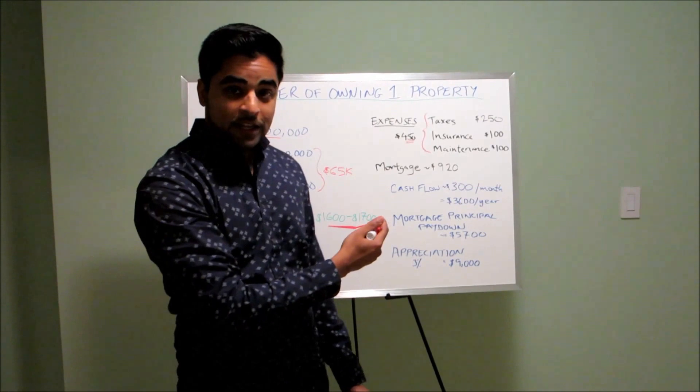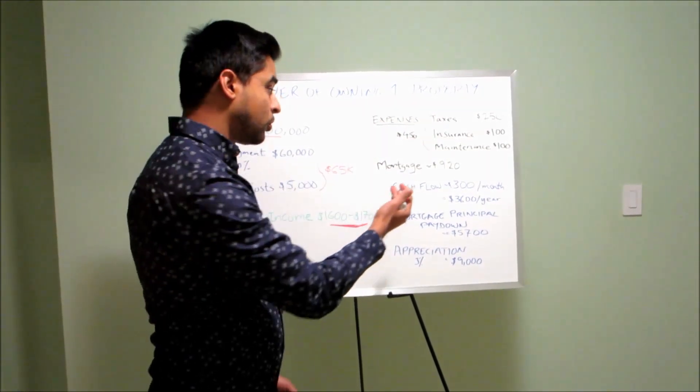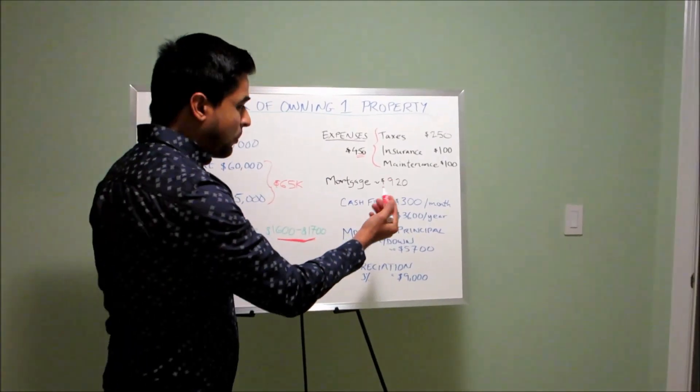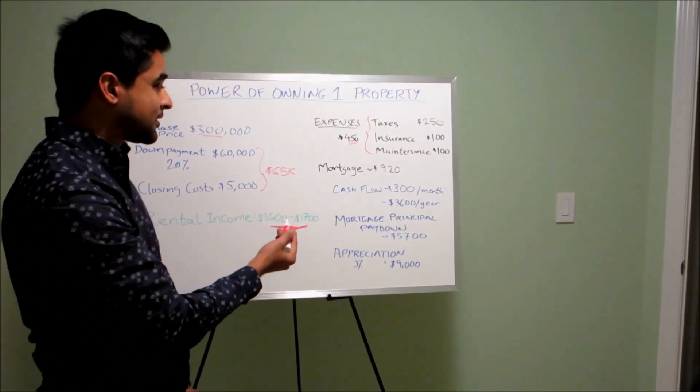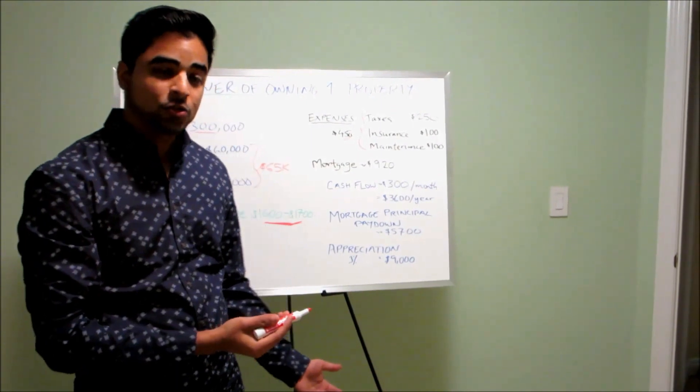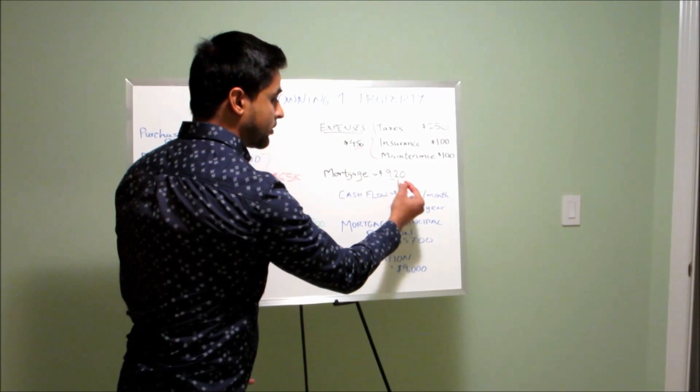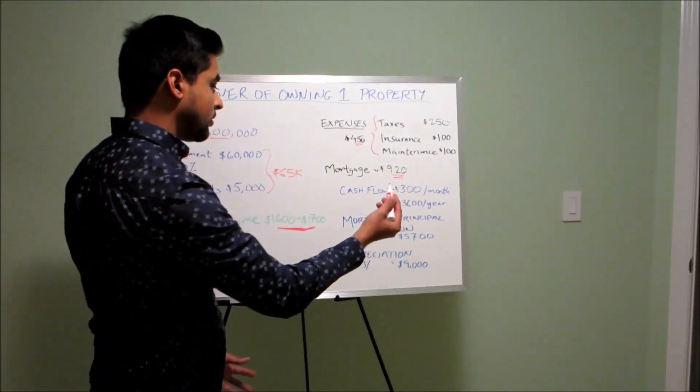Next thing is your mortgage pay down, or your mortgage charge every month. Approximately in this particular case, I'm using a 2.3% 30-year amortization. You're going to come up with $920 a month.